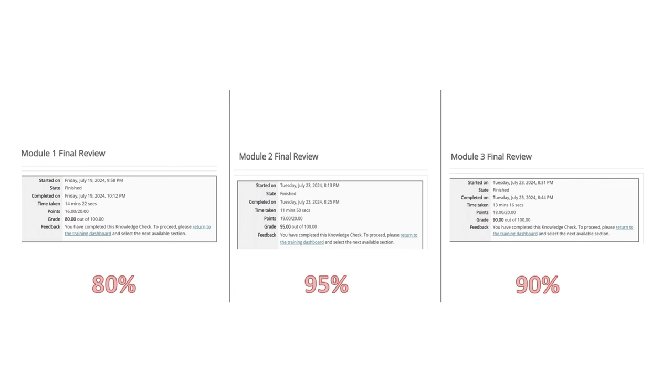That's exactly what I did — I did not study and did not go through the training, just to see how well I could do. I'm going to go back through the training, because I always like to refresh on the material. As you can see on the screen, when I took module one's quiz I scored 80 percent, module two 95 percent, and module three 90 percent. It took me about 15 minutes for module one, 11 minutes for module two, and 13 minutes for module three. There are 20 questions per module, and I passed all three. Now I'm working on module four.